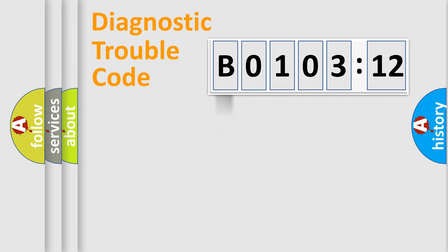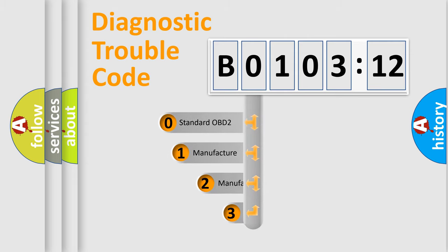Powertrain, Body, Chassis, Network. This distribution is defined in the first character code.